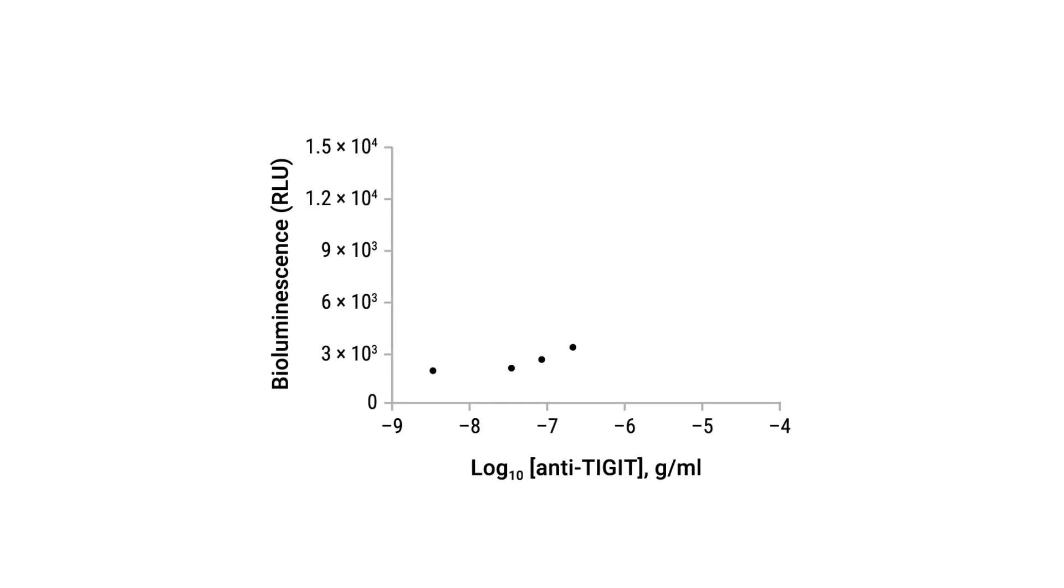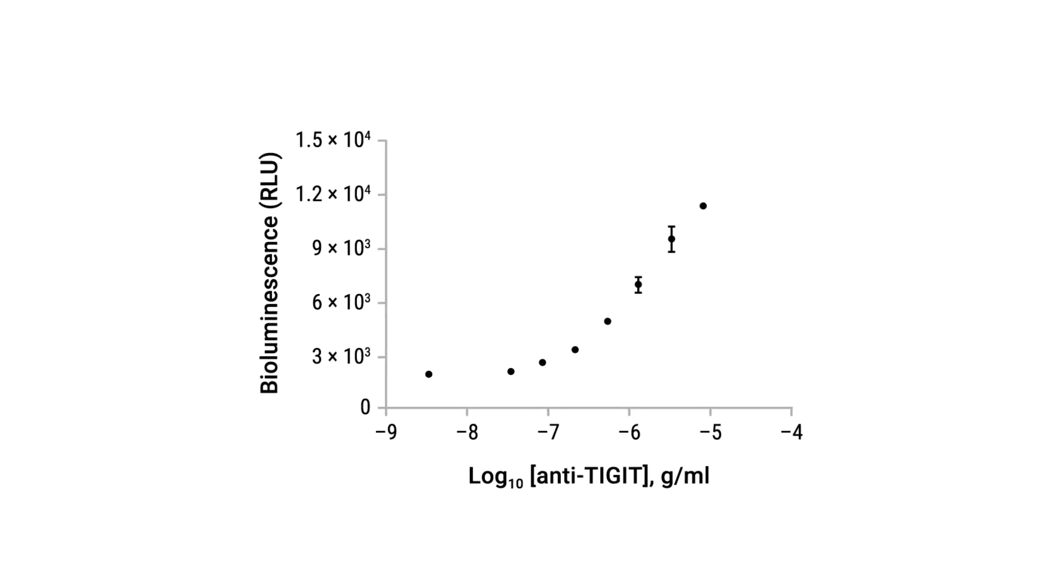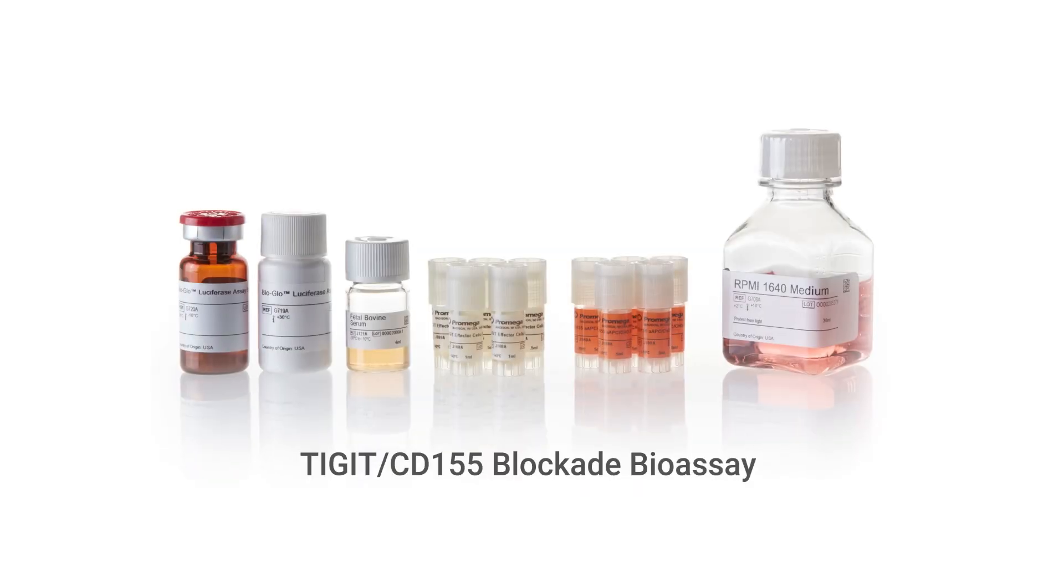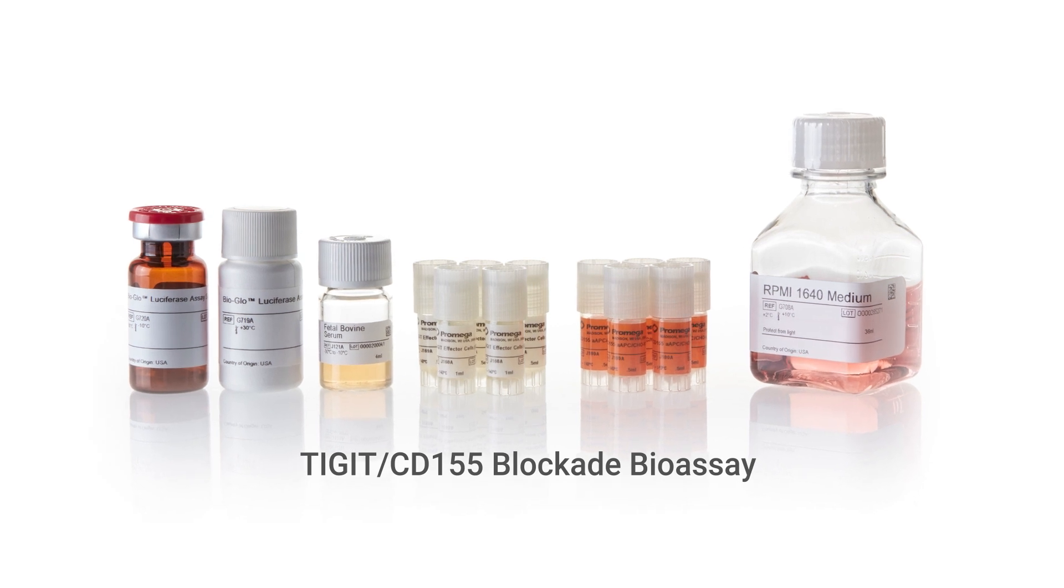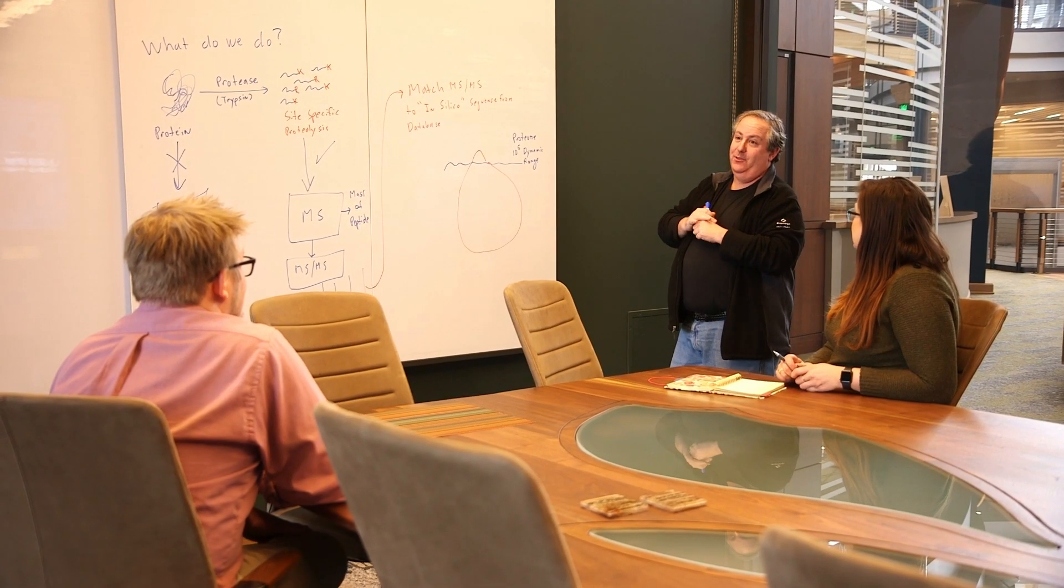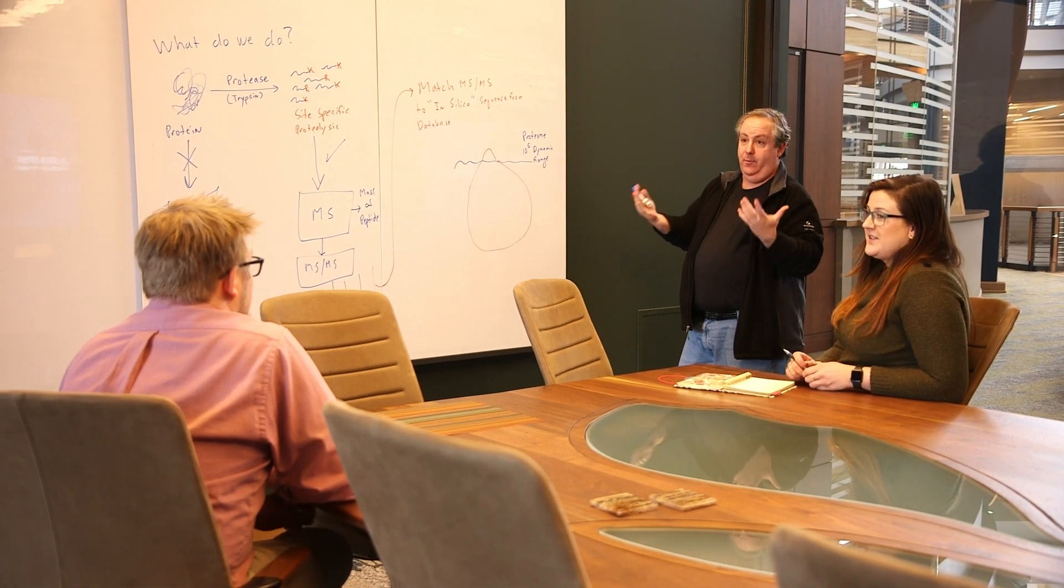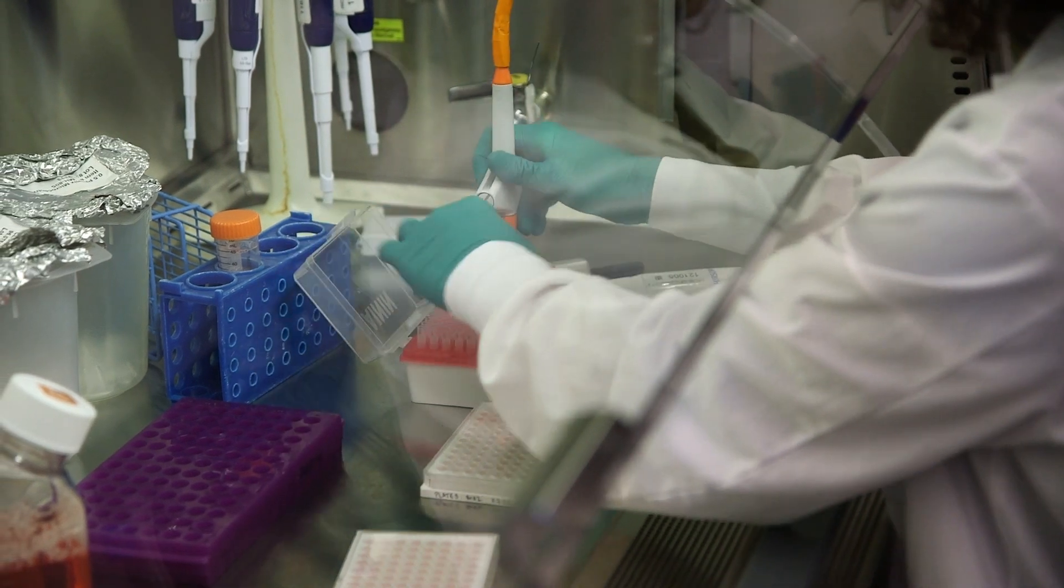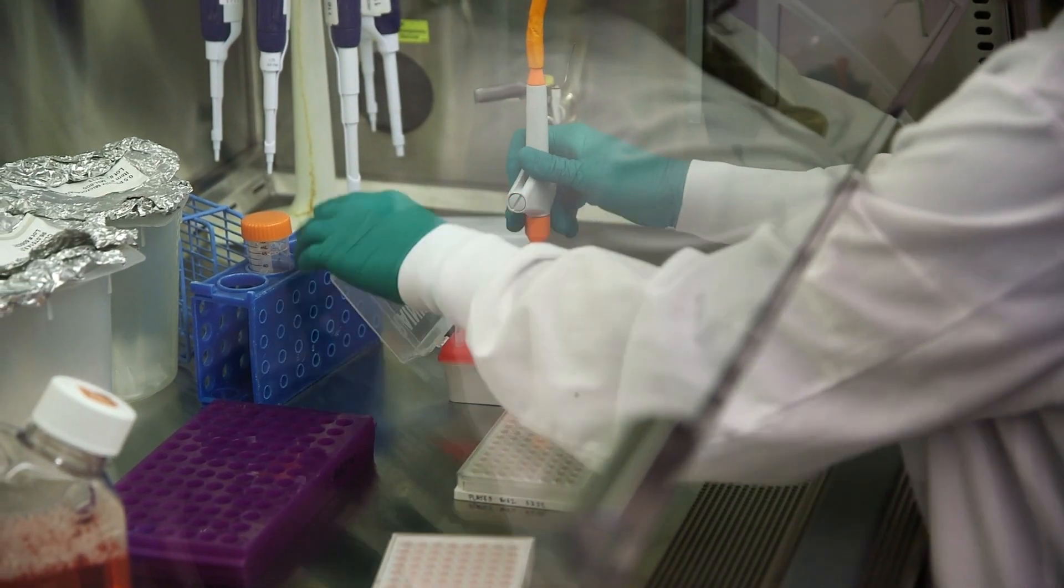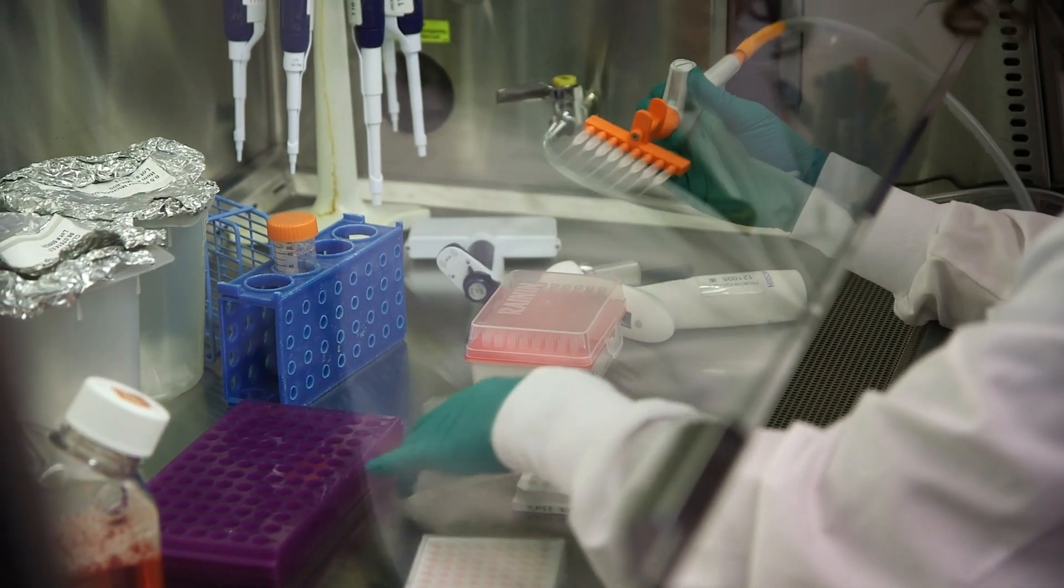TIGIT bioassay is a cell-based luminescent reporter assay that's used to measure the potency of biologics that are designed to inhibit TIGIT function. The TIGIT bioassay was created by myself and a group of Promega scientists. In 2016, we had a client approach us to develop a bioassay for TIGIT antibodies, and at the time we didn't have one, but we had generated a portfolio of cell-based bioassays for other immune checkpoints, so we felt like we had the expertise to work on it.